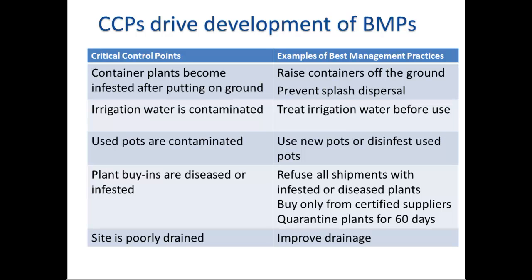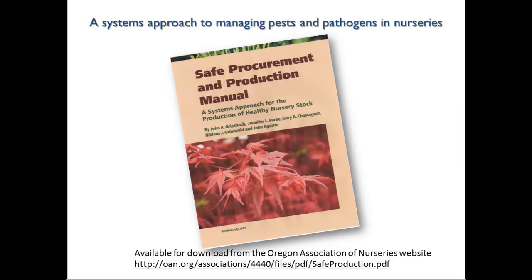Once we knew the critical control points in these nurseries, we could advise growers on best management practices to correct the problems. For example, if container plants were becoming infested after being placed on the ground, we advised growers to raise containers off the ground or otherwise prevent splash dispersal. If their irrigation water was contaminated, we recommended treating it before use. The critical control points really drive the development of best management practices. Our research findings helped us develop a manual published by the Oregon Association of Nurseries, showing growers how to implement a systems approach to manage pests and diseases. The manual is available for free download from their website.